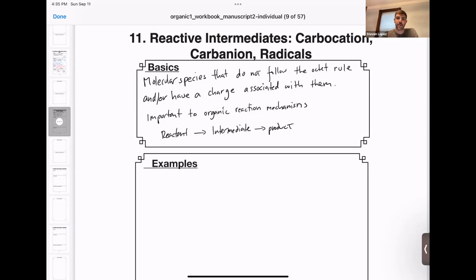Hi everyone and welcome back to Organic Chemistry on YouTube. Today we'll be talking about reactive intermediates. There are three kinds that we'll be discussing: carbocations, carbanions, and radicals.